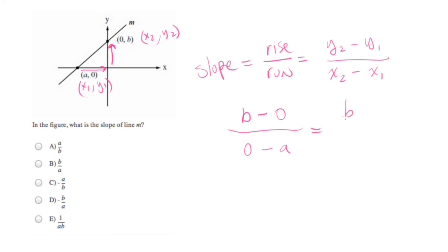And if we simplify this, we end up with b over negative a. And let's come down here and look at our answer choices. We don't quite see a match, but notice that in the answer choices, they do put negative signs out in front of the fraction. This is the same as negative b over a, which we do have an answer for. That's answer choice d.